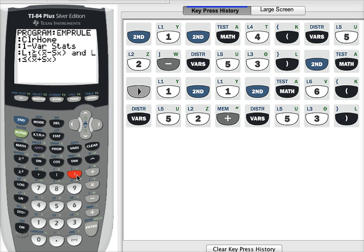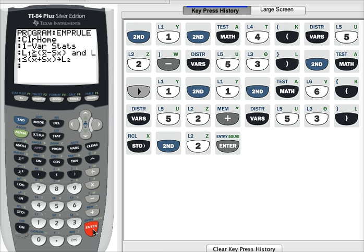And I need to store this into list 2. So to get that arrow, we just press the STO button here. And then list 2, second, 2, and enter. Enter will take us to the next line of the program. And now we have to display our percentage.